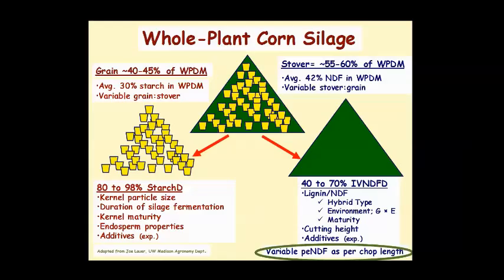Silage fermentation duration is important because silo bacteria can break down the zein proteins that surround starch, making it more available. We decided to test fermentation duration as a tool to overcome negative effects of maturity or hybrid type. Maturity matters because while starch accumulates as corn stays in the field longer, those zein/prolamine proteins also accumulate — so extra starch gained from delayed harvest may be less digestible. Most commercially available hybrids are vitreous, meaning they have more of these proteins than floury hybrids.